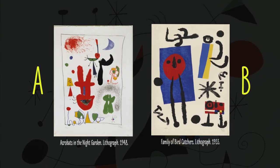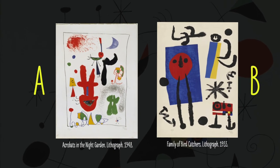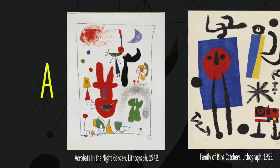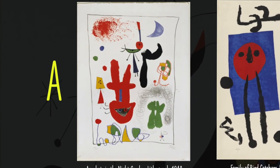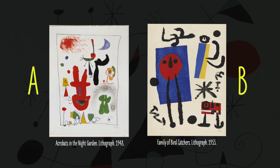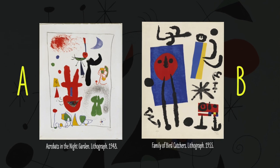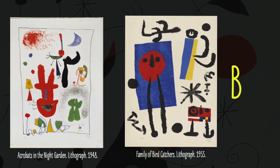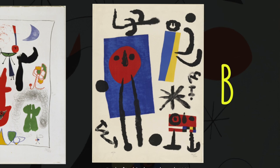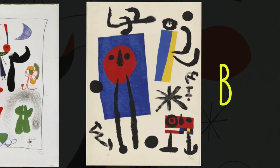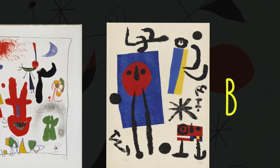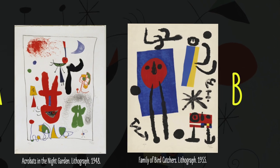Look at picture A and picture B. What story is he telling us in picture A? What story is he telling us in picture B? Think about how Joan Miró used lines and shapes to tell a story.